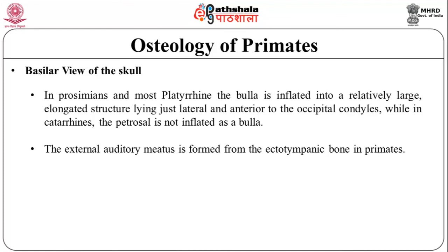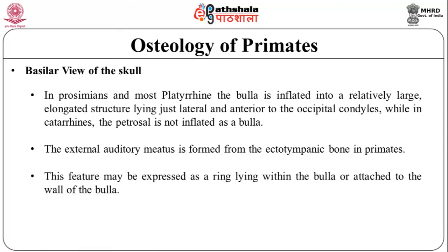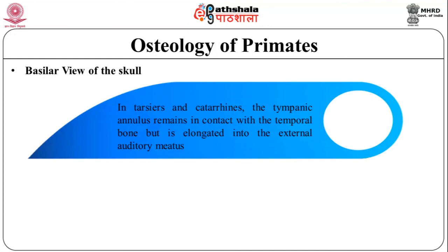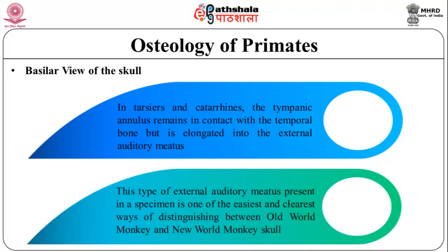The external auditory meatus is formed from the ectotympanic bone in primates. This feature may be expressed as a ring lying within the bulla or attached to the wall of the bulla. In tarsiers and catarrhines, the tympanic annulus remains in contact with the temporal bone but is elongated into the external auditory meatus. The type of external auditory meatus present in a specimen is one of the easiest and clearest ways of distinguishing between old-world monkey and new-world monkey skulls.